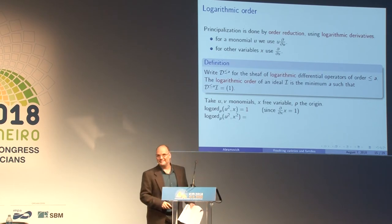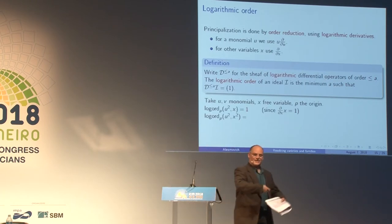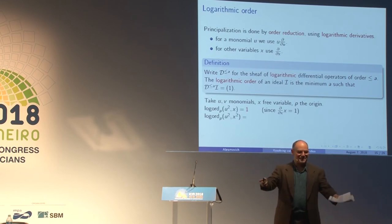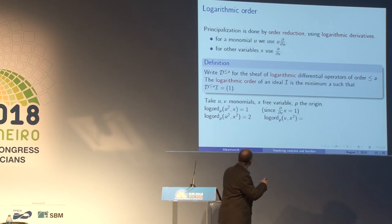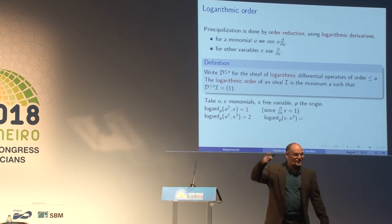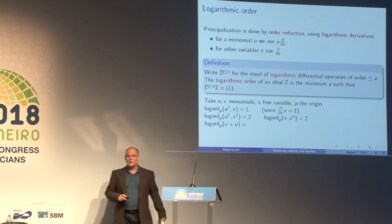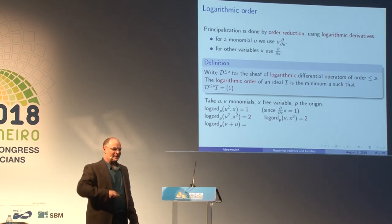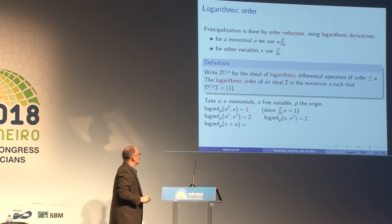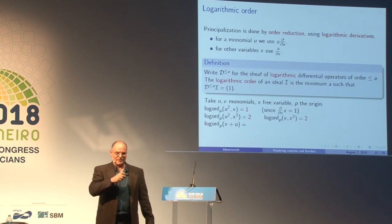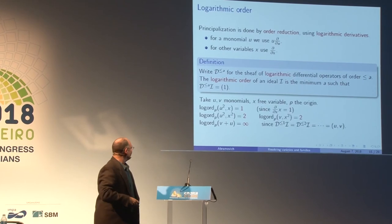What's the logarithmic order of (u², x²)? It's two, because if you take the derivative of x twice you get 2, which is a unit. And (u², v²) is also of logarithmic order two, because with respect to v we only take the logarithmic derivative: v · d/dv of v does not reduce the order. Now look at the ideal (v + u): what's the logarithmic order at the origin? It is infinity — taking the first derivative with respect to v gives v, with respect to u gives u, and taking further derivatives you stay there.